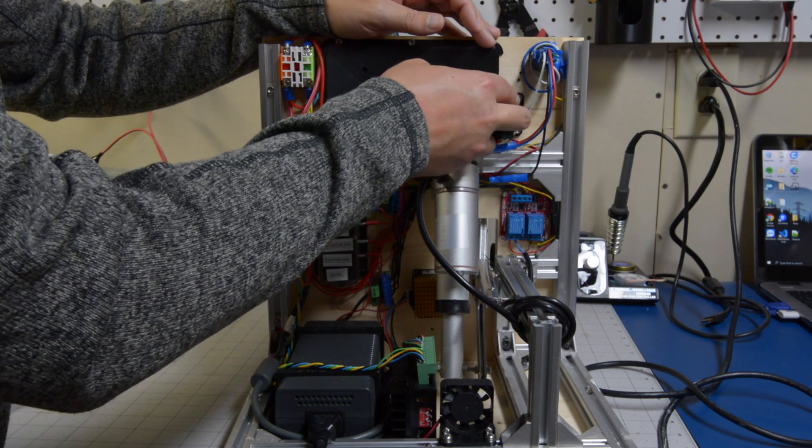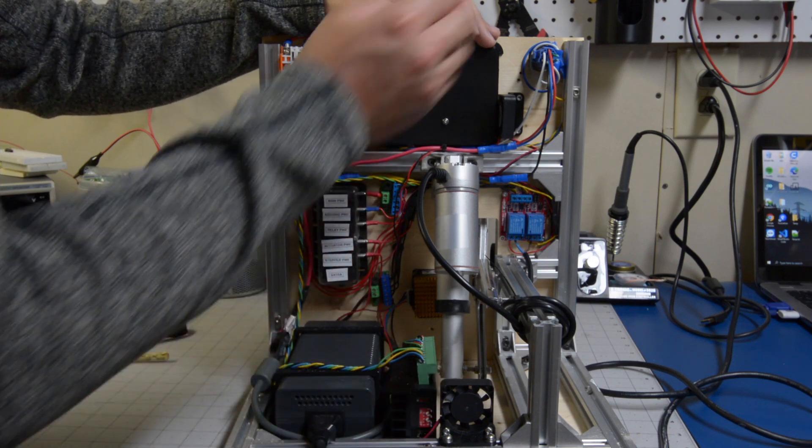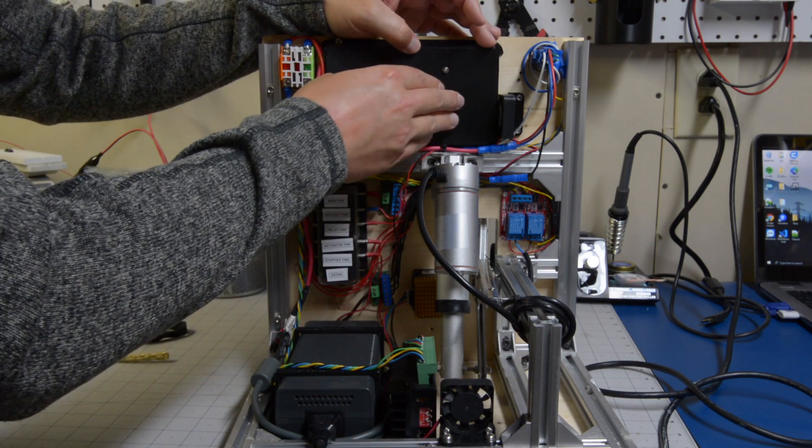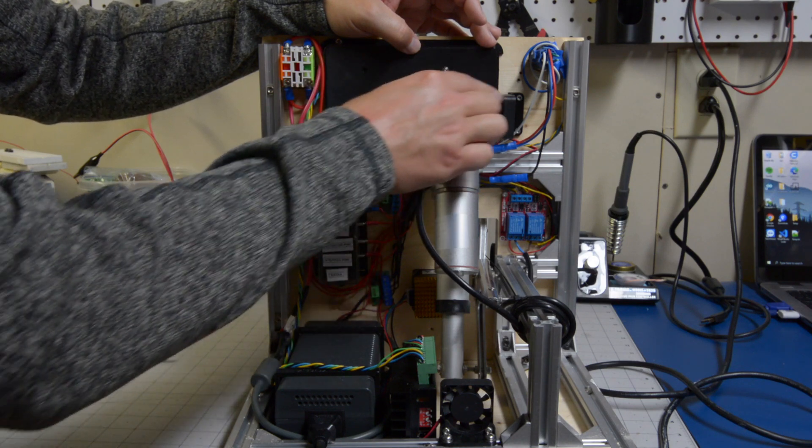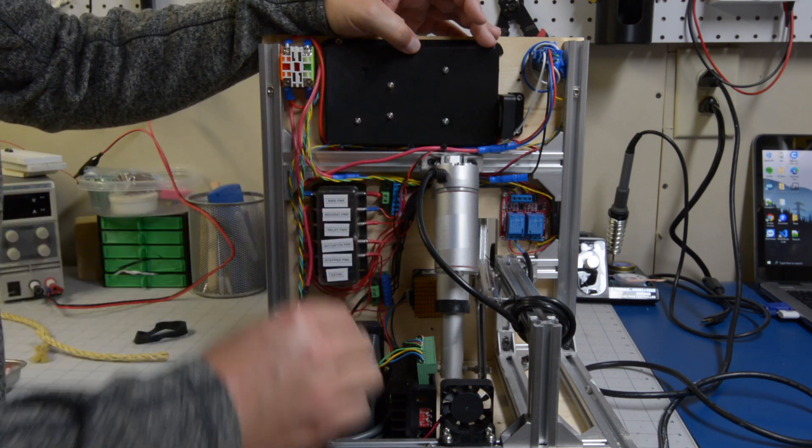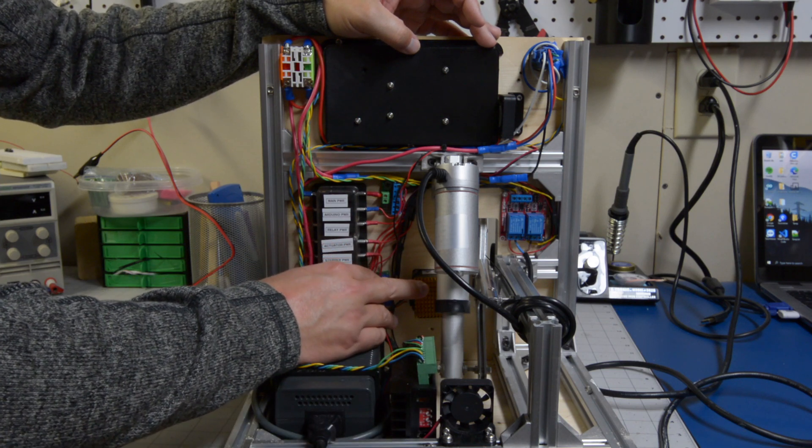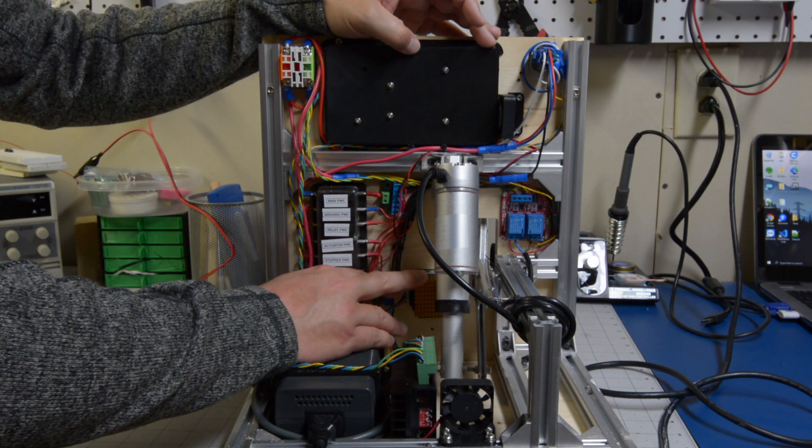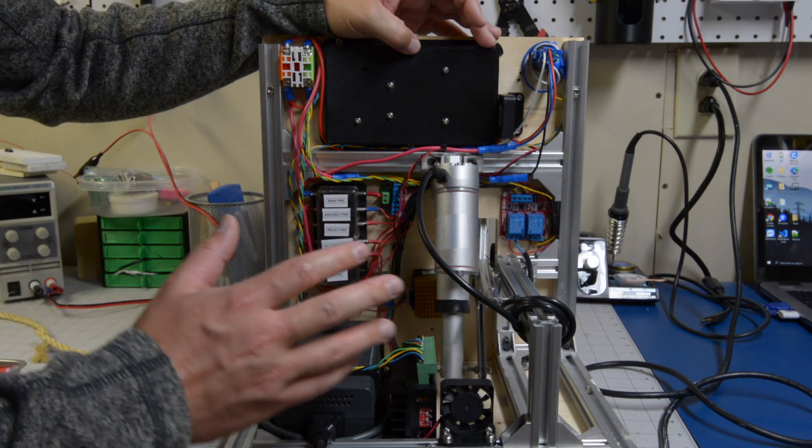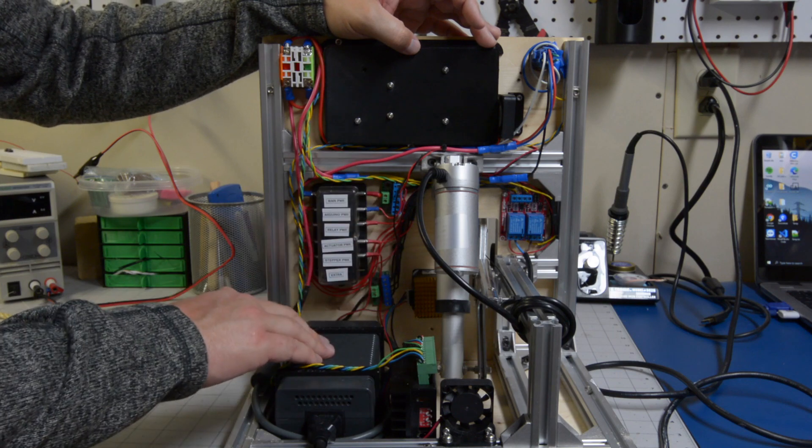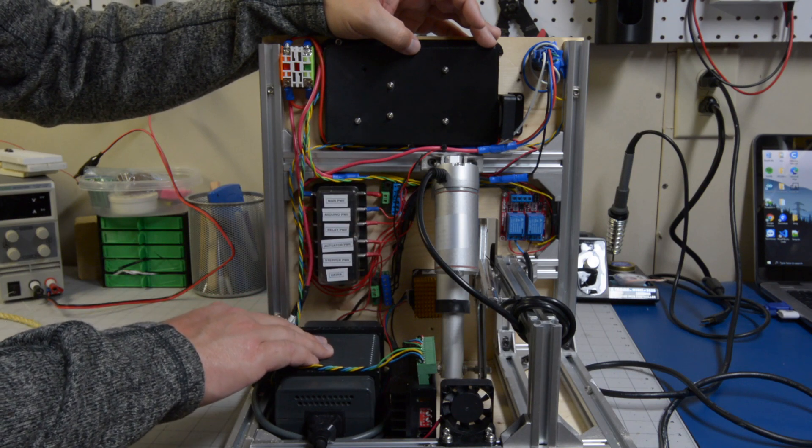Lastly we've got two 40 millimeter fans. As I mentioned before the voltage regulator on the Arduino Mega does get a little warm so this is to help keep it cool and this is also here to help keep our stepper motor cool. After about a thousand cuts it does get a bit warm. So now you have seen all the internal components we will box it back up and show you how it works.